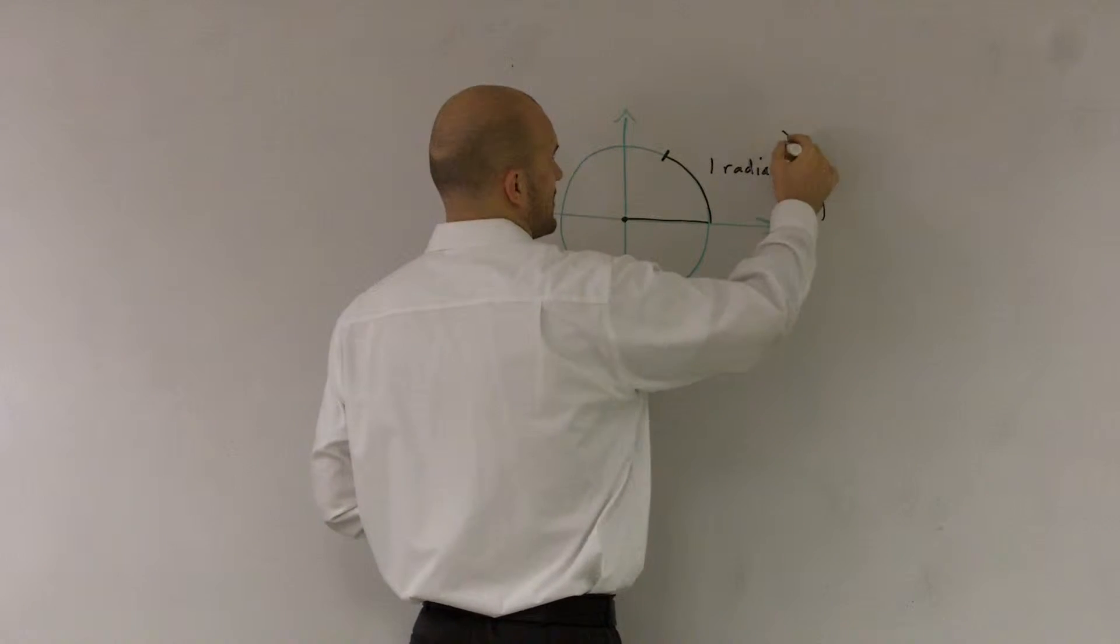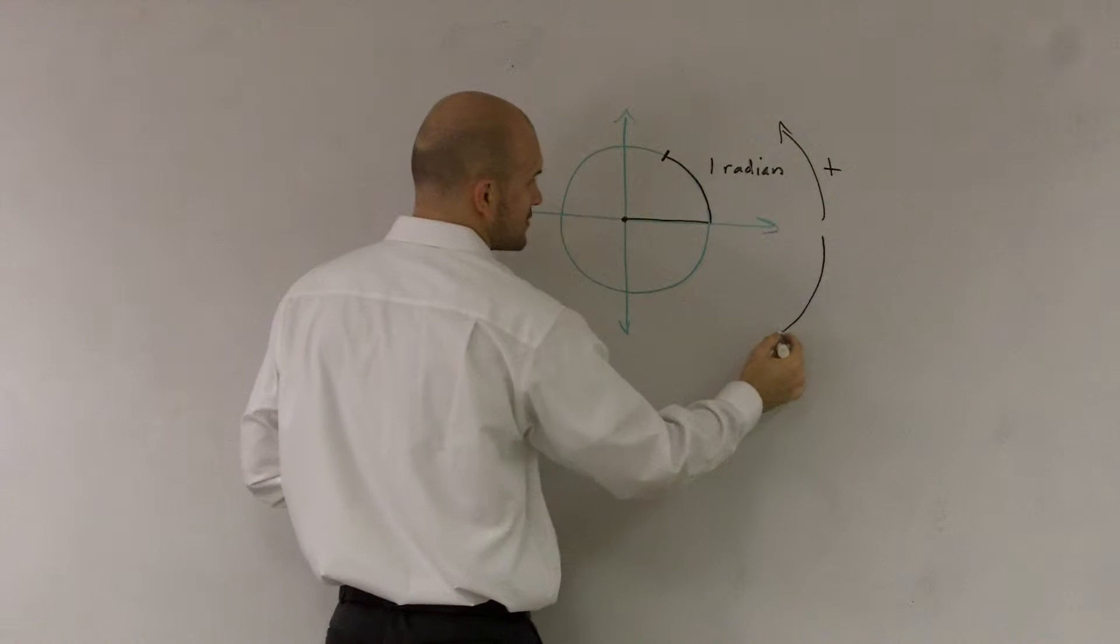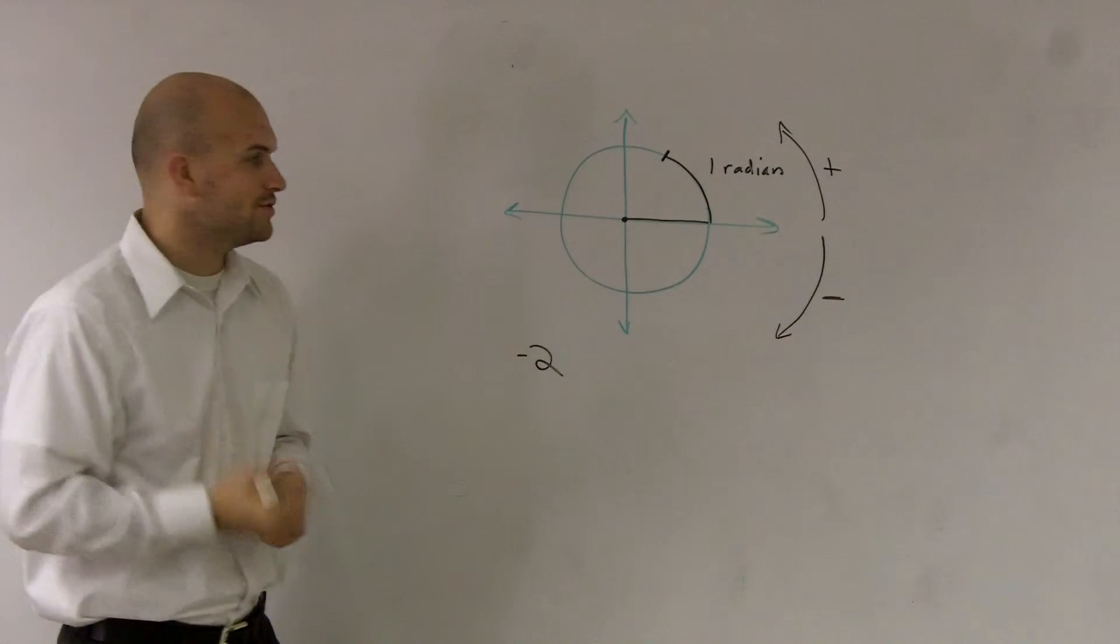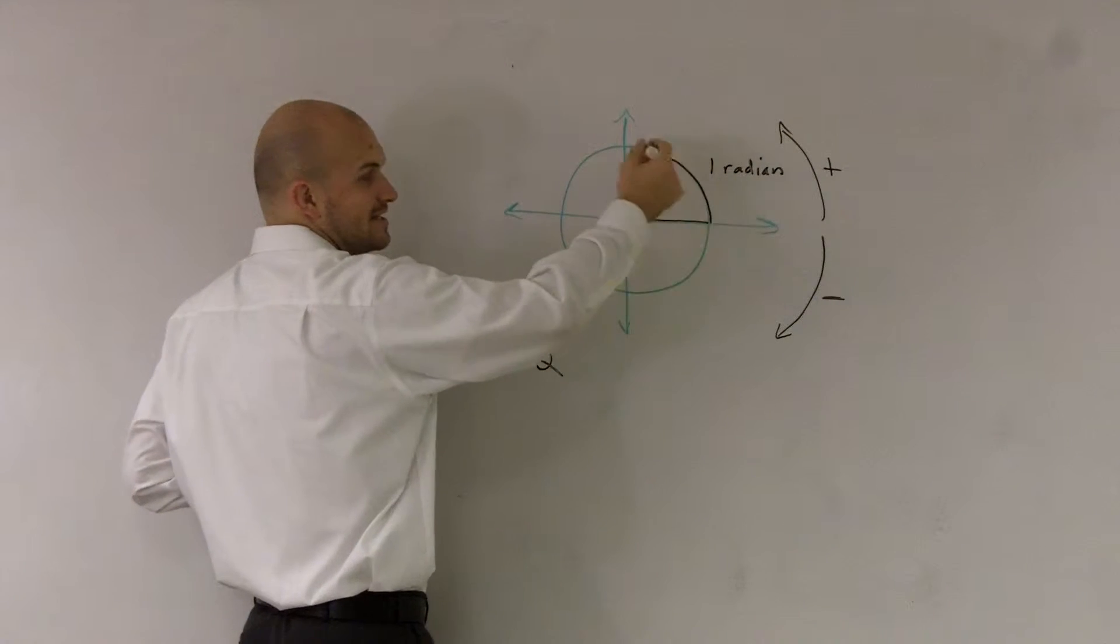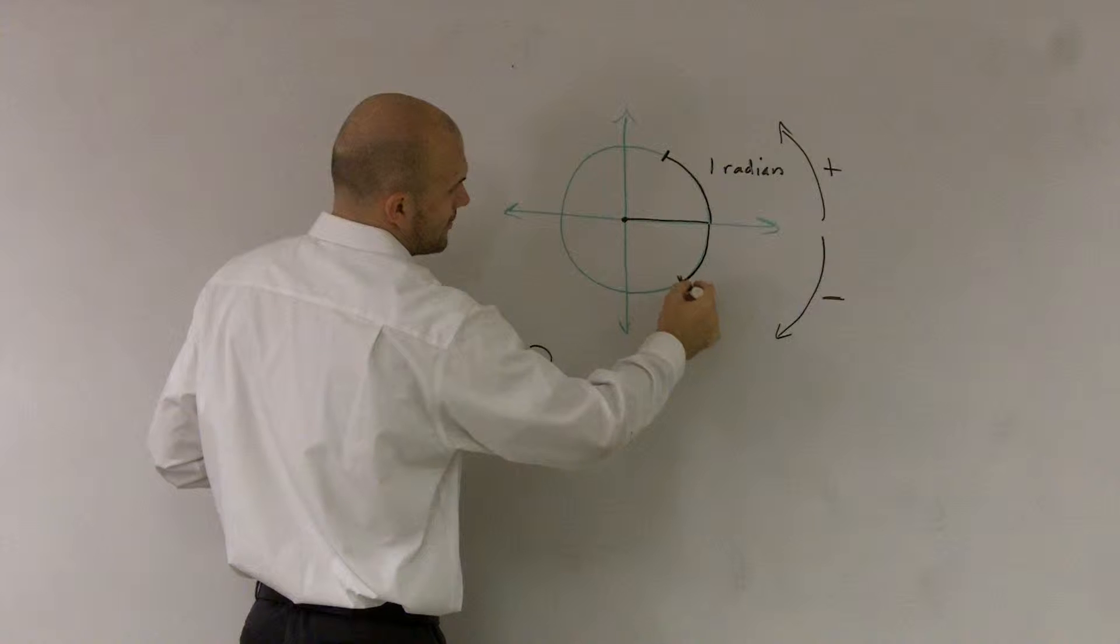So I told you guys, this way is the positive direction. Counterclockwise is the positive direction, and clockwise is what we call the negative direction. So what I need to do is, I'm going to go, instead of going radians this way, I'm going to calculate two radians this way.